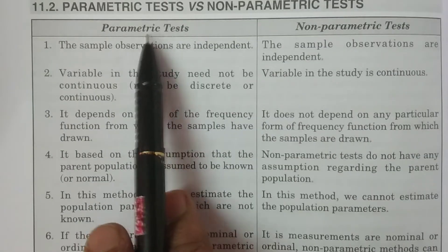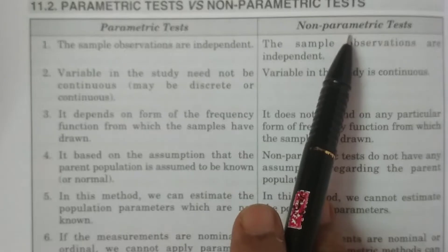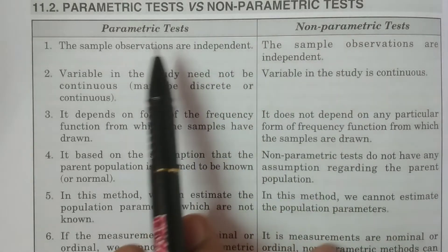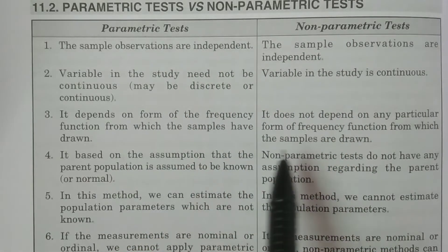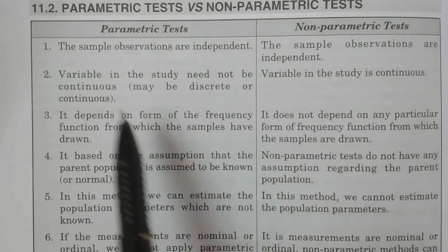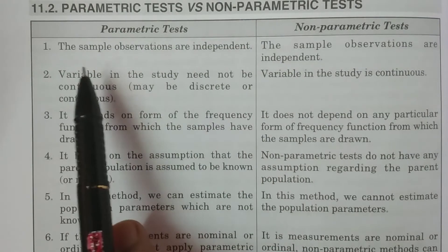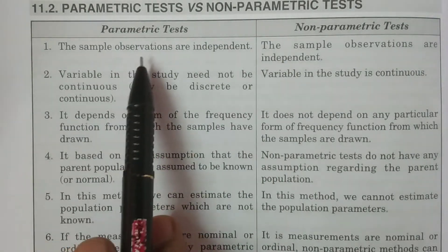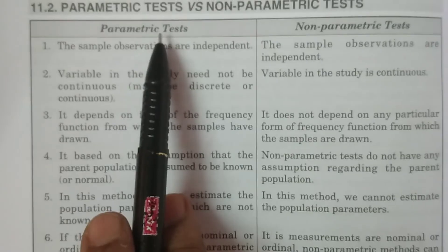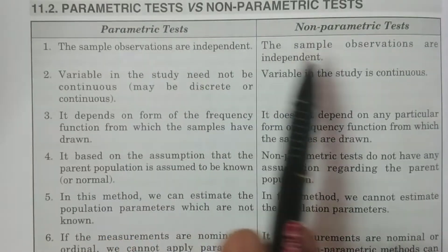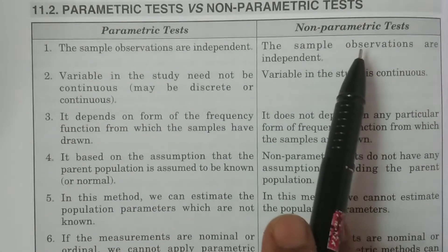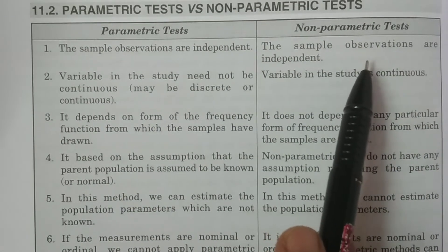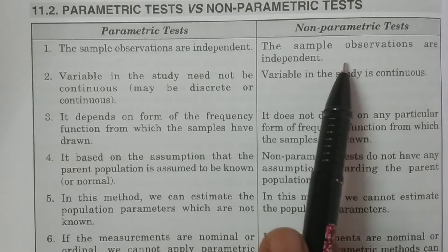This is the parametric test and this is the non-parametric test, so that you can easily identify both. The first point: sample observations are independent in the parametric test, and in the non-parametric test also, sample observations are independent.